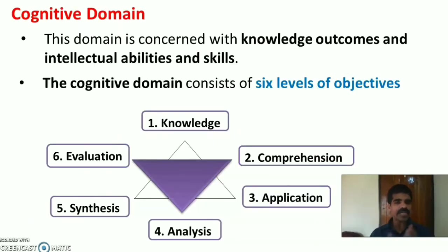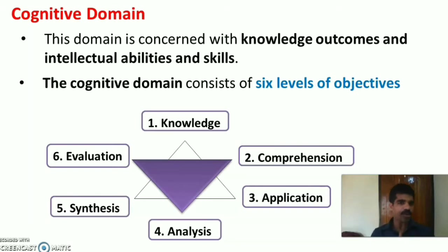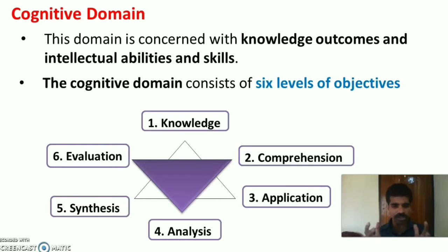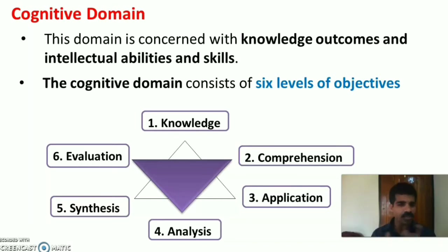The cognitive domain is concerned with knowledge outcomes and intellectual abilities and skills of a student. The cognitive domain consists of six levels of objectives as per the 1956 taxonomy: knowledge, comprehension, application, analysis, synthesis, and evaluation. These six levels of objectives were revised in the 2001 taxonomy.